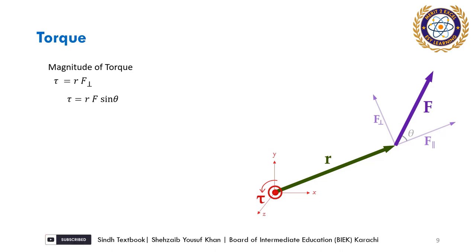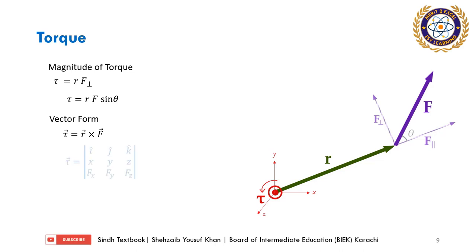So in vector form, torque is r cross F. The vector product gives magnitude of both vectors multiplied by sine of the angle between them. If we know the r and F components, we can use the properties of vector product to get torque.